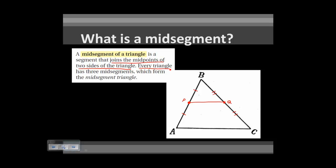Every triangle has three mid-segments. We can also find the mid-point of segment AC and call it R, where AR is congruent to RC. One mid-segment is already drawn; another connects Q to R, and the last connects P to R. The new triangle formed by connecting all three mid-points is called the mid-segment triangle — triangle PQR is the mid-segment triangle of triangle ABC.